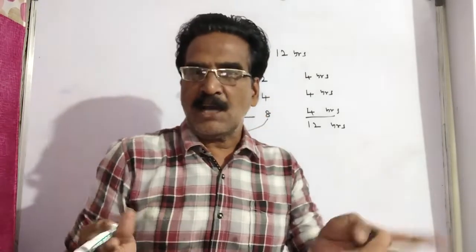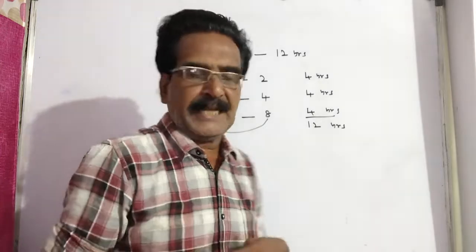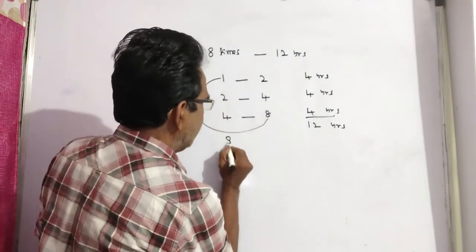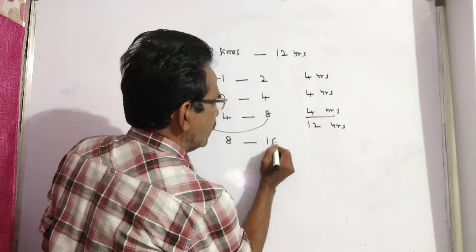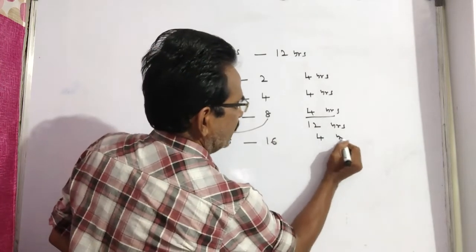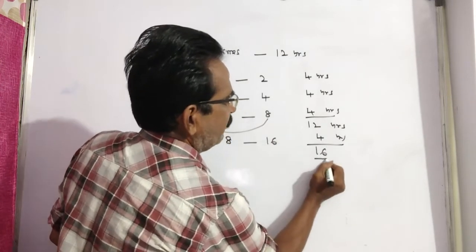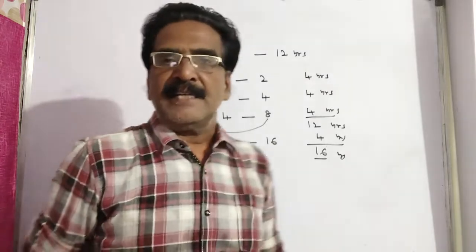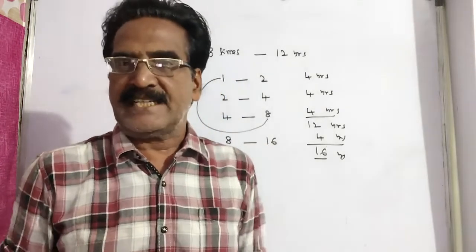Now the question is in how many years it becomes 16 times. See, this 8 becomes 16 in another 4 years. That means in a total period of 16 years, it becomes 16 times of itself.